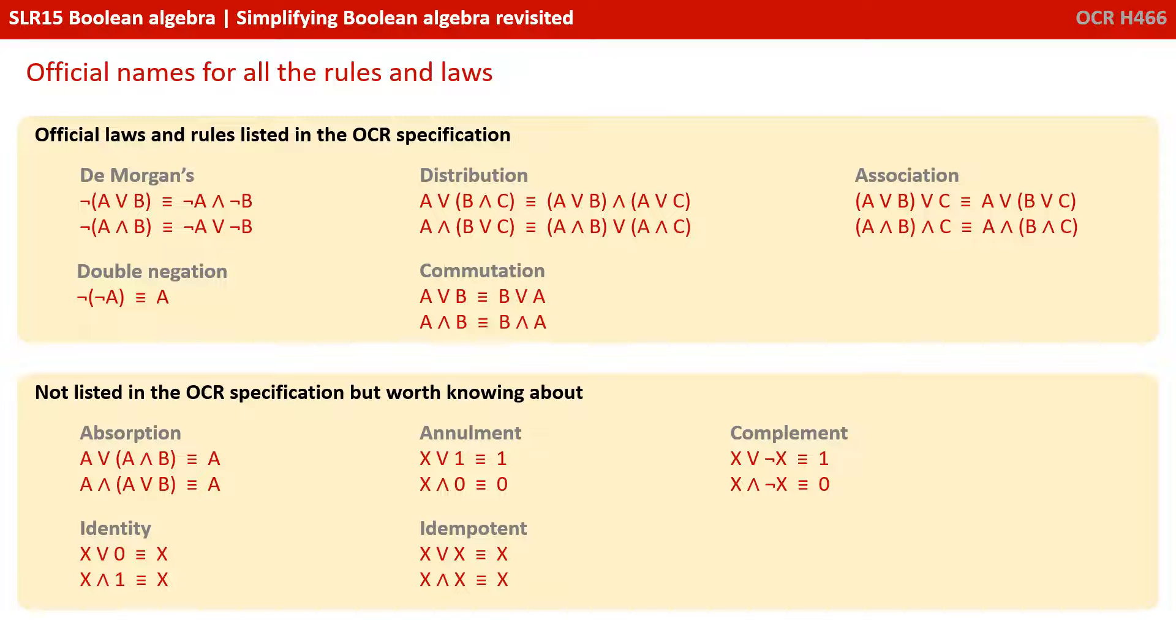So on the screen here is the official laws and rules listed in the OCR specification at the top. So they're the ones that will appear in the exam and they're the names the exam board will use. But we've gone over a number of other rules including absorption and a number of what we called general AND or OR rules. Now they have official names in Boolean algebra and simplification. And because they might crop up in other textbooks or you might see them on other videos, or if you go on to studies at university you'll certainly need to know them, we've included them here so you can get a fuller understanding.